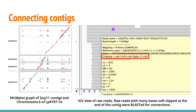Here's an overview of how we found potential contig connections. The MUMplot on the left shows all of the contigs that correspond to chromosome 6 of the reference genome. To investigate these possible connections, we looked at the raw reads that comprise the ends of the contigs. We looked for raw reads that were soft-clipped, to try to match the clipped end to the end of the adjacent contig in the MUMplot graph.